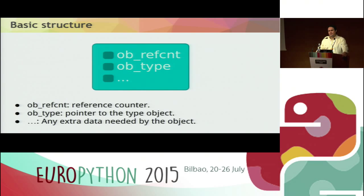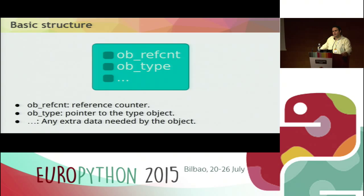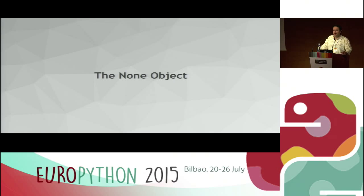This is the basic structure of a CPython object. Every CPython object has at least two fields: ob_refcnt, which is the reference counter, and ob_type, which is a pointer to the object that stores the type. Depending on the type of the object, you can have some extra data. I'm going to talk about individual objects in CPython and explain how each object is structured.